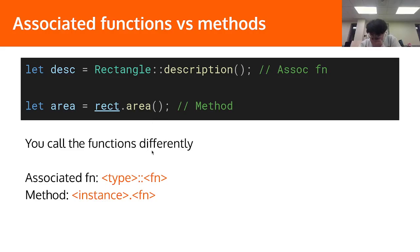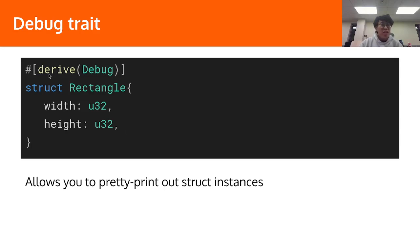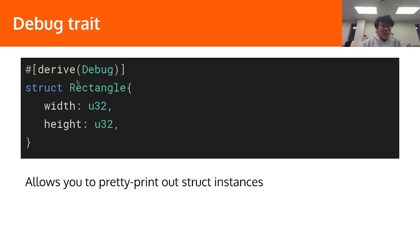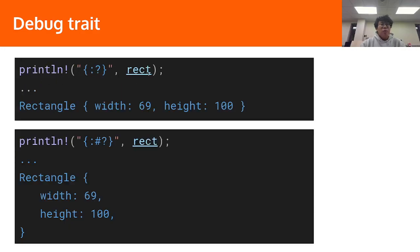The last thing I want to talk about is the debug trait. We'll cover traits in a later lecture, but here: when we define a struct like Rectangle, we can add `#[derive(Debug)]` above it. This allows us to print out specific instances of the struct, which is really helpful for debugging — that's why it's called the debug trait. We can use println! to print the rectangle and it will print out all the fields and their values. There's also pretty-print format, which prints each field on a new line, which is quite helpful for showing the struct's values during debugging.